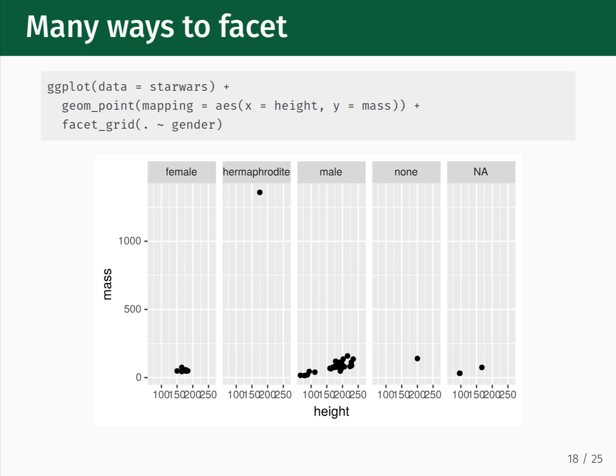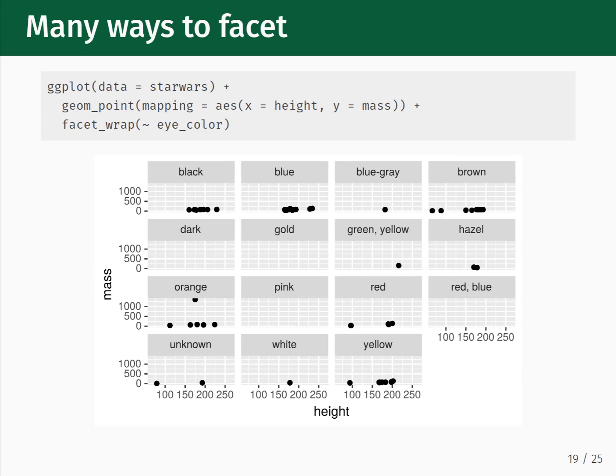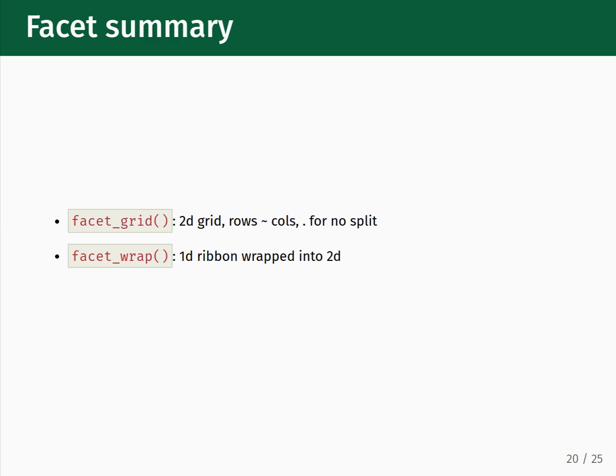To change things up a little, we now facet over eye color, but we use the facet_wrap function instead of facet_grid. Inside the parentheses, we simply have tilde eye_color. Notice that facet_wrap displays facets a little differently — it shows a few subplots in one row, and then after four columns, it continues making more subplots on a second row, continuing until all the labels in the eye color category are shown. To summarize: to create facets, we can use facet_grid and facet_wrap. facet_grid creates a two-dimensional grid — inside the parentheses you have rows ~ columns, and use dot if you don't want to split along one of the dimensions. facet_wrap creates a one-dimensional ribbon that wraps around into multiple rows.